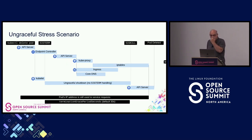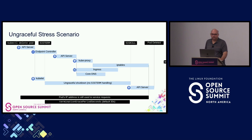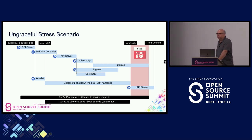But now let's take a case where the system is under stress — a heavily loaded node where everything runs a little bit slower. Updating iptables can sometimes take a long time; kube-proxy also can take a long time under load. This is where the ungraceful shutdown falls apart — because after 30 seconds, kubelet will send a SIGKILL to hard stop the application, but the IP address is still being used to service traffic. When this happens, you'll get 500 errors.